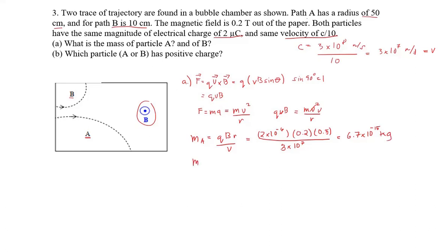Now on to mass of particle B. Same thing. This is R of A. This is R of B. And that is 2 times 10 to the negative 6 Coulombs, 0.2 Teslas. This time it's 0.1 meters for radius, divided by 3 times 10 to the 7 for our velocity. And this yields 1.3 times 10 to the negative 15 kilograms.